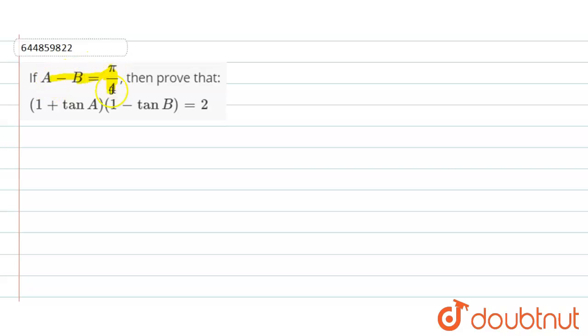If A minus B is equal to π by 4, then prove that 1 plus tan A into 1 minus tan B is equal to 2. Now let's come to our solution. So here A minus B is equal to π by 4.